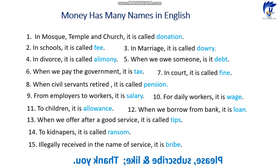Some companies around the world also pay allowance to their workers and employees. Number twelve: when we borrow from a bank it is called a loan. We use this word when we talk about money that we borrow or that people borrow from the bank.